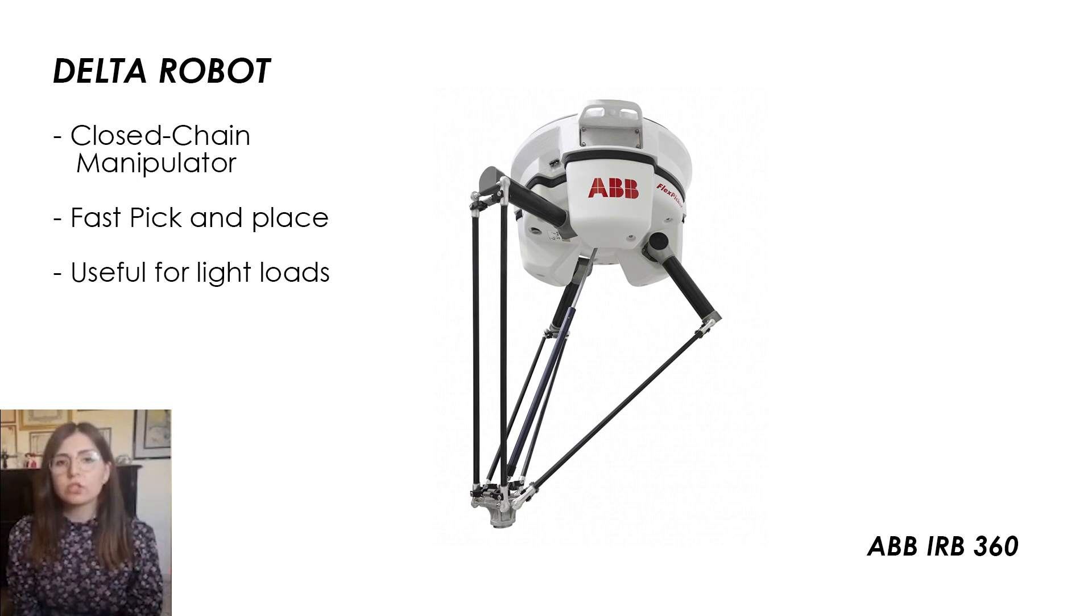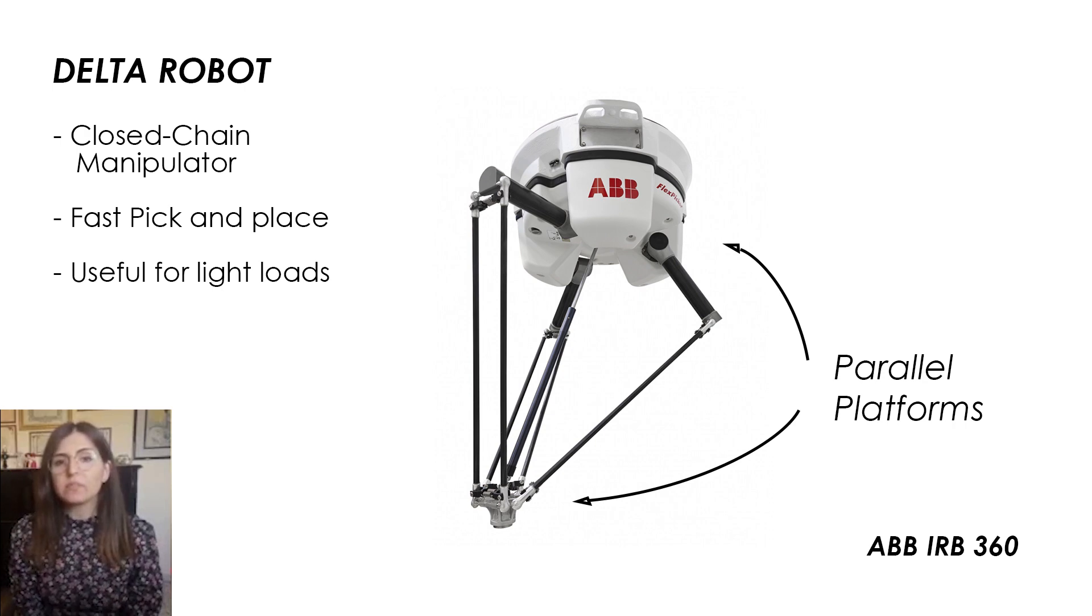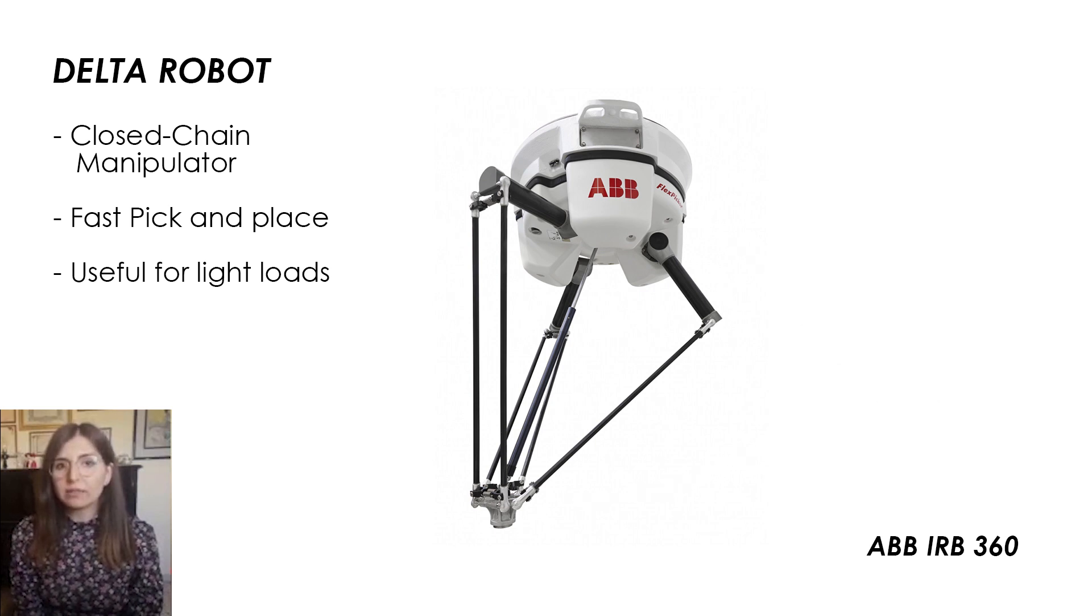A Delta Robot is a parallel closed chain robot which consists of two platforms, the upper one that is fixed and the moving one on which the end effector is attached. The platforms are connected through three arms with parallelograms which restrain the orientation of the lower platform to be parallel to the upper one.